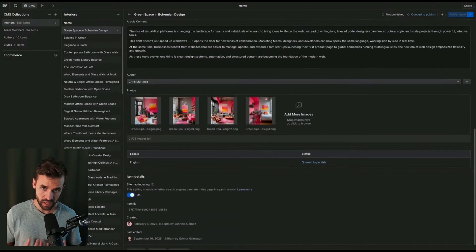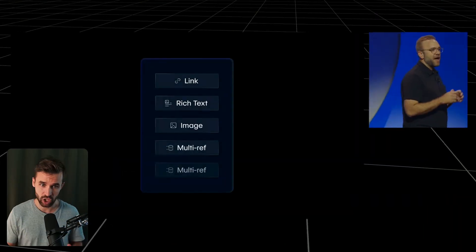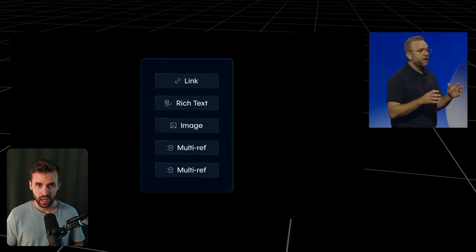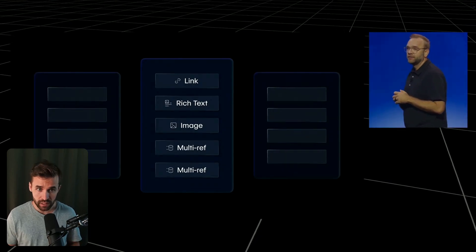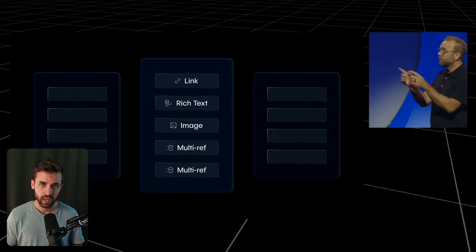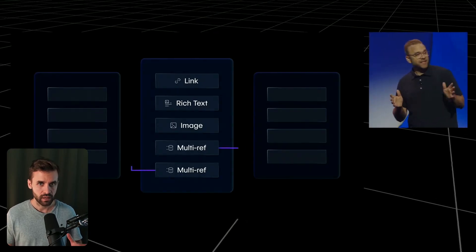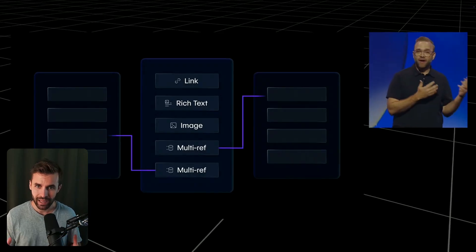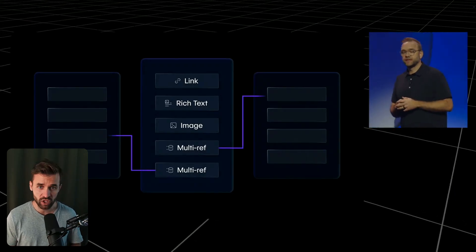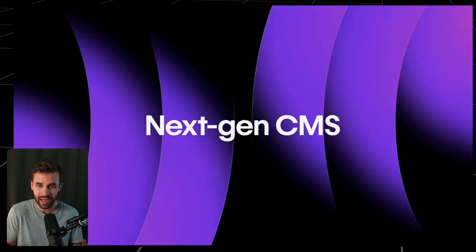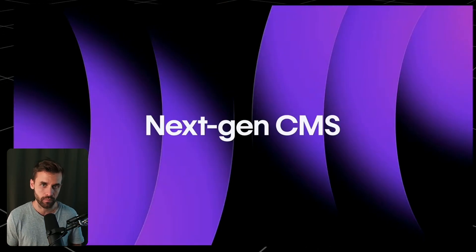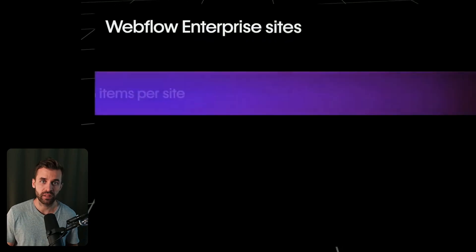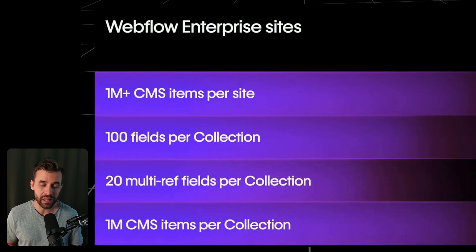The next topic is the next-gen CMS, and this might actually be the most important announcement after AI, because the CMS is the foundation of pretty much every site I build. Webflow has rebuilt the CMS from the ground up, with goals of more flexibility, more scalability, and better performance — especially for larger projects. Until now, the CMS was often the bottleneck as projects grew. Large data sets, complex relations, or nested structures often slowed everything down or hurt the designer experience. Key improvements include enterprise sites scaling up to 1 million CMS items.